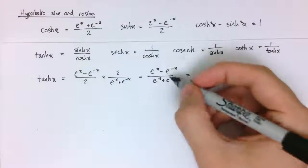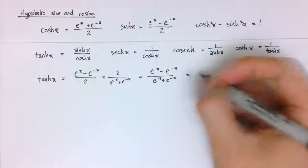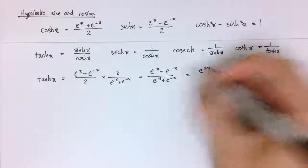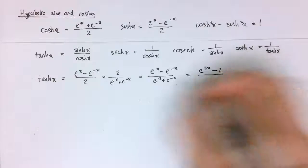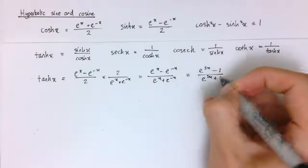And if we multiply through by e to the x, top and bottom, we get e to the x times e to the x, that's e to the 2x. e to the minus x times e to the x is 1, so that's minus 1. Similarly, on the bottom we get e to the 2x plus 1.